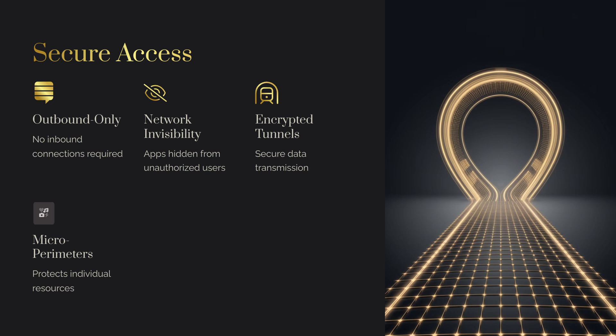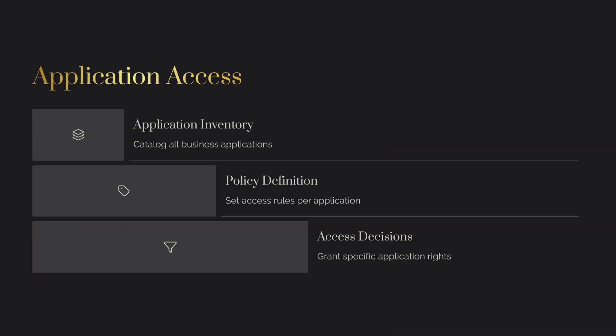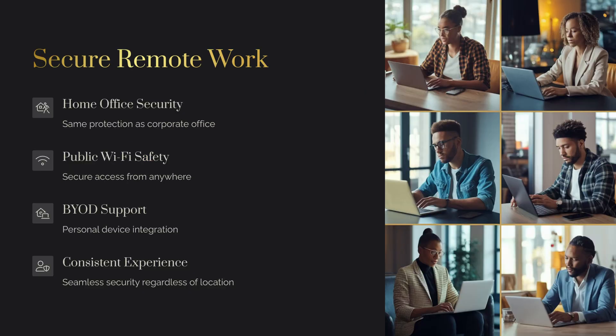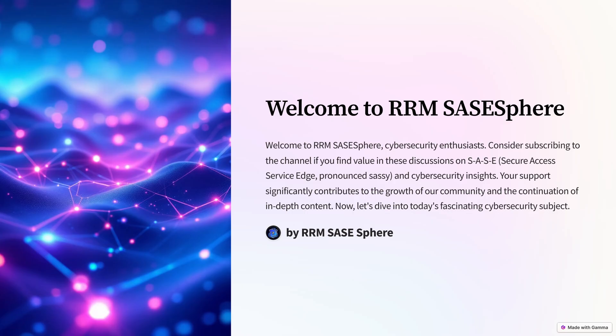ZTNA emphasizes least privilege access — users get access only to necessary resources, which prevents lateral movement within the network. ZTNA is essential for modern businesses, as traditional security models rely on perimeter defenses. ZTNA verifies every access attempt, making it more effective.